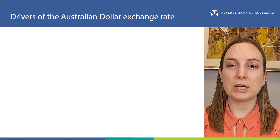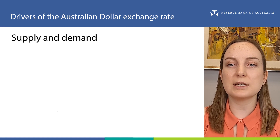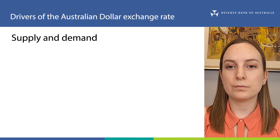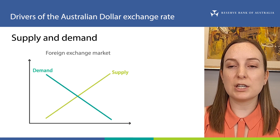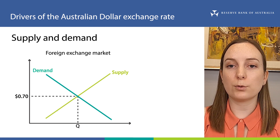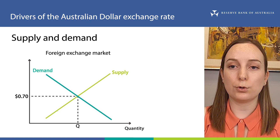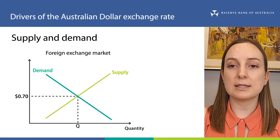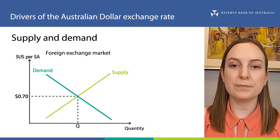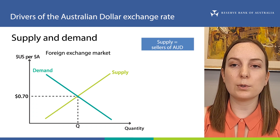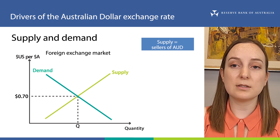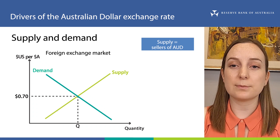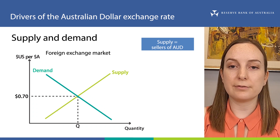First, let's talk about how changes in the supply and demand of Australian dollars can cause the exchange rate to move. Australian dollars are sold and bought — or supplied and demanded — in the foreign exchange market. On the x-axis is the quantity of Australian dollars traded, called turnover. On the y-axis is the exchange rate between the Australian dollar and another currency, such as the US dollar. Supply is made up of anyone wanting to sell Australian dollars for a foreign currency. This could be Australians buying imported goods and services, Australian investors making investments overseas, or foreigners selling Australian dollar investments.